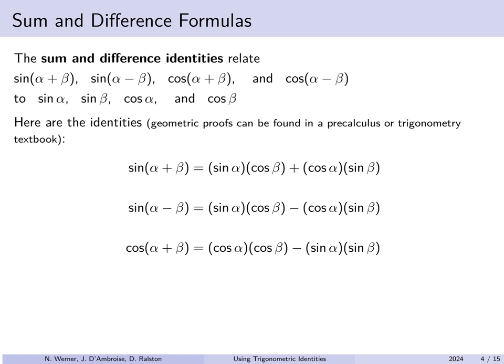The cosine of alpha plus beta is cosine alpha cosine beta minus sine alpha sine beta, and the cosine of the difference replaces the minus with a plus. The key thing to keep straight is that the formulas for sine mix up sine and cosine of the two angles but maintain the plus versus minus, whereas the formulas for cosine keep cosine times cosine and sine times sine but reverse plus to minus or minus to plus. You don't need to memorize them — you will usually have them available to refer to.